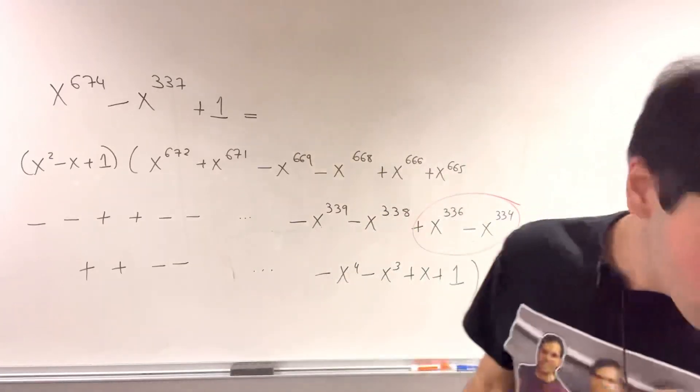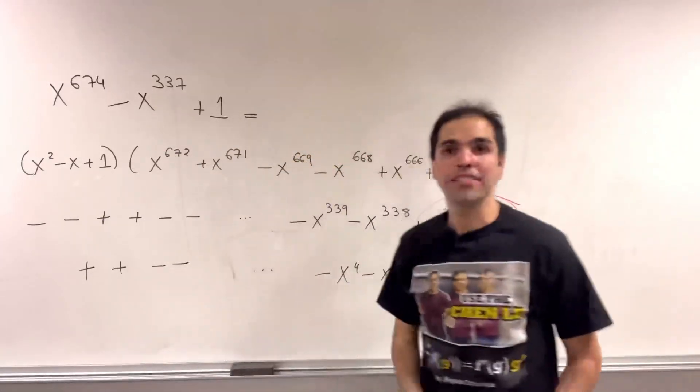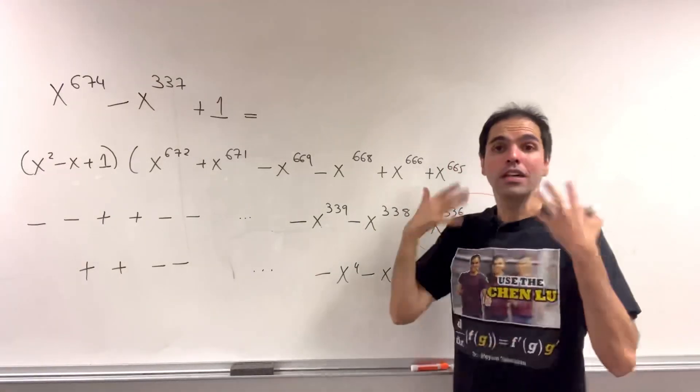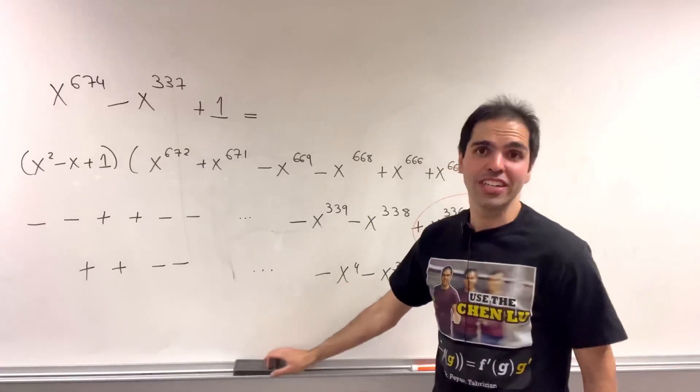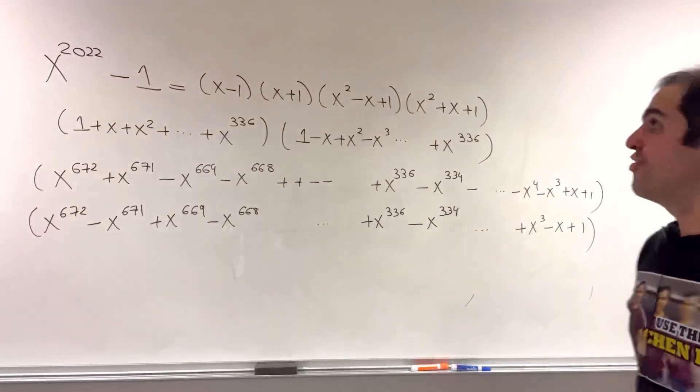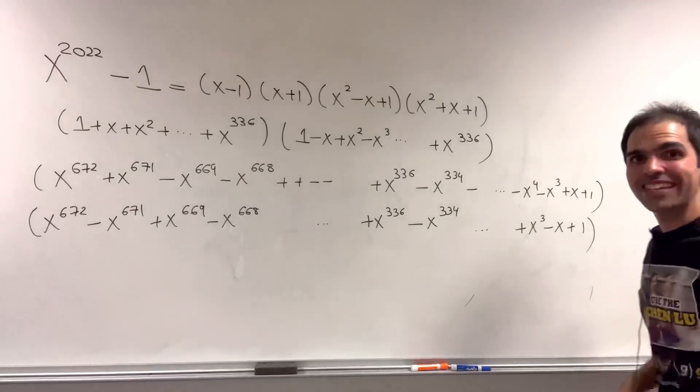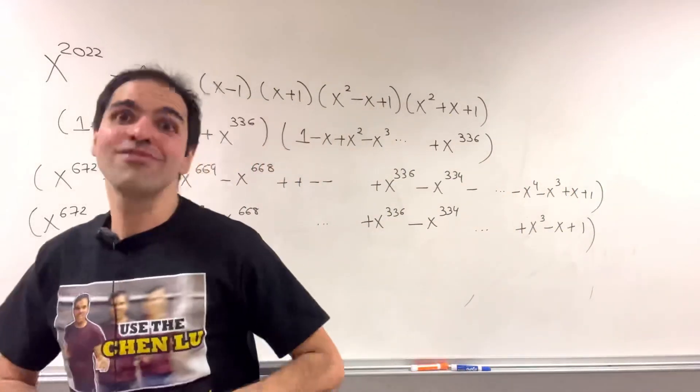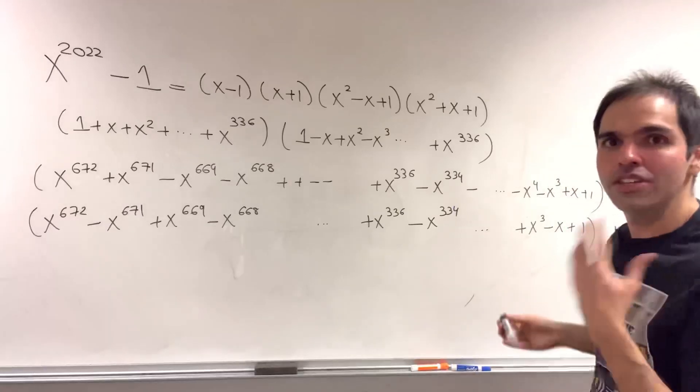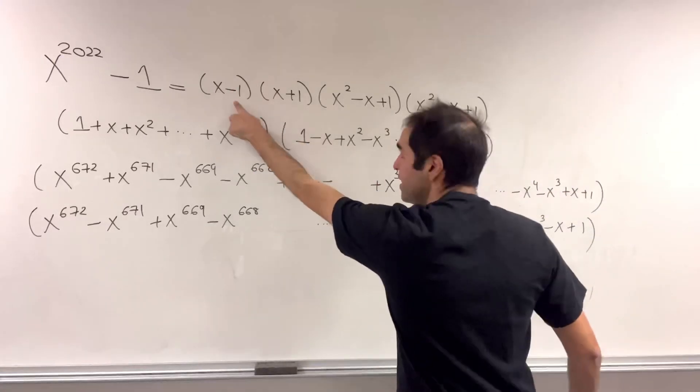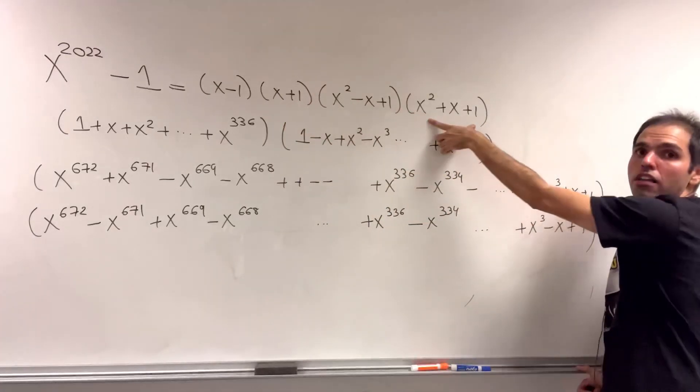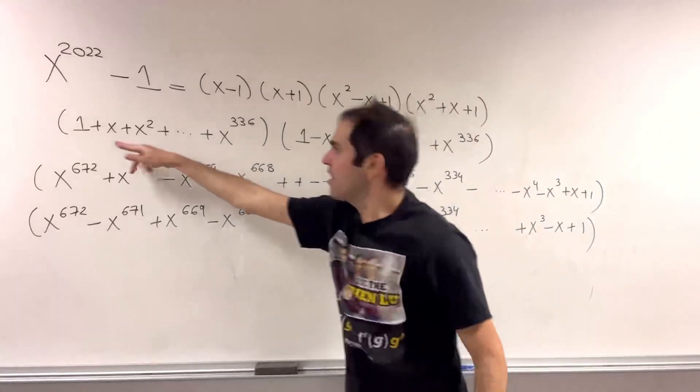And similarly, you have it with the other expression, if we replace x by minus x. And summa summarum, lo and behold, you then get the following factorization of x to the 2022 minus 1.